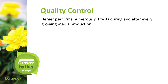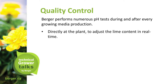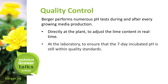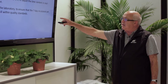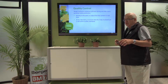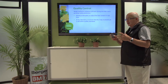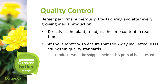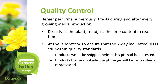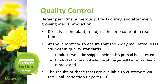Berger performs numerous pH tests during and after every growing media production, directly at the plant to adjust the lime content in real time, and at the laboratory to ensure that the seven-day incubated pH is still within quality standards. We want to make sure that the pH at seven days is where we need it prior to shipping, to ensure that the grower is actually starting at the target pH indicated for that mix. Products will not be shipped before the pH has been tested, and products outside the pH range will be reclassified or reprocessed. The results of these tests are available to customers via a final inspection report — an FIR.